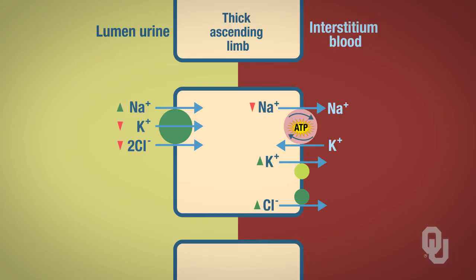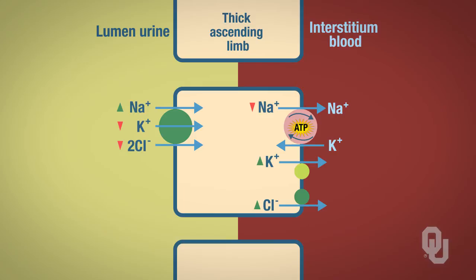Now let's focus on the basolateral membrane and how potassium and chloride ions get across it. There is a carrier protein here for potassium. Potassium is going from a high concentration toward a low concentration, so this is facilitated diffusion across the basolateral membrane.